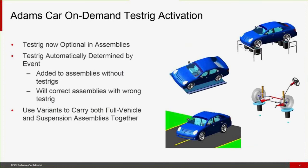Moving along to on-demand test rig activation. This allows us to really think of things as the vehicle and not as the vehicle stuck to some test rig modeling — be it the tilt table, SPMM, flat road, or suspension test rig. Test rigs are now optional in assemblies and are automatically determined by the event. They'll be added to assemblies that don't have test rigs, or if an assembly has the wrong test rig for the event being run, it will autocorrect on the fly. We can also combine this capability with variants to carry both full vehicle and suspension assemblies together within the same assembly.